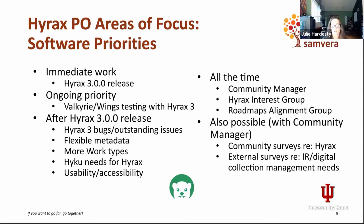In terms of software priorities, the immediate work is the Hyrax 3.0 release, which is currently in process with quality assurance testing recently completed. The release includes updates to support Rails 5.2 and Ruby 2.7, changes to default metadata using better properties for basic required information about digital objects, updates to IIIF supporting file versioning and transparent PNGs, and an introduction of Valkyrie Wings to the code base. Valkyrie Wings will be an ongoing priority even after Hyrax 3.0 is released.